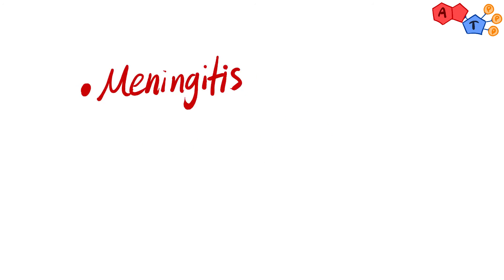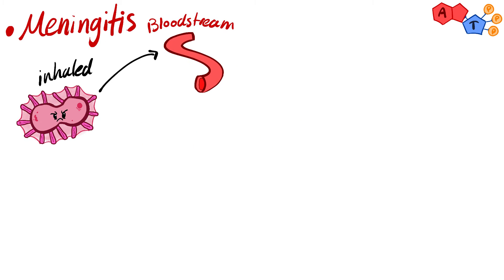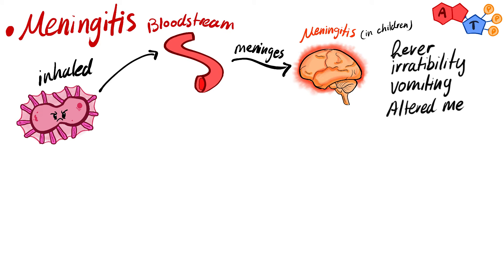The next disease is meningitis. After inhalation of Haemophilus influenzae, it invades the bloodstream and then travels to the meninges. The infected child presents with fever, irritability, vomiting, and altered mental status.